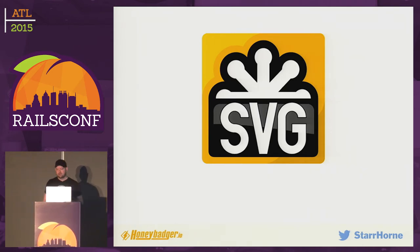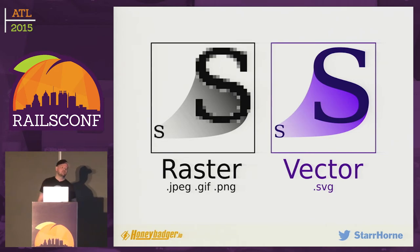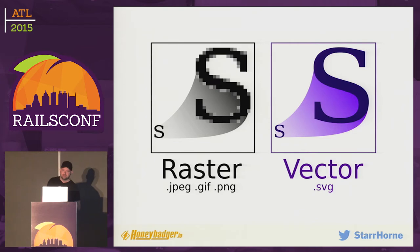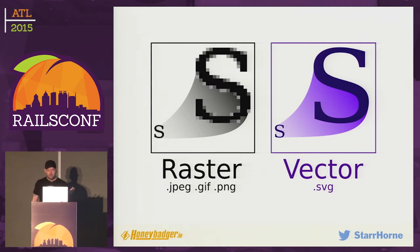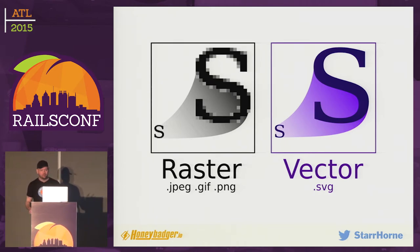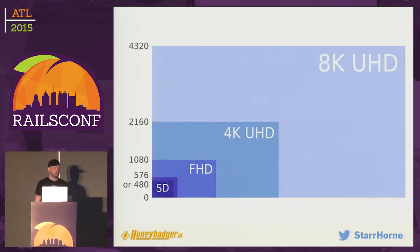The big difference is that while raster graphics are made out of pixels — so if you have a 10 by 10 raster image and you blow that up to 1,000 by 1,000, unless you work for CSI Miami, it's going to look like crap — vector images are made out of math. They have no real pixel dimension, so you can scale them up or down. That's super important lately because the guys who make computer monitors are just on a roll.